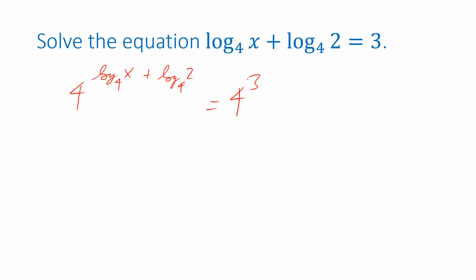Well, now we can use a property of exponential functions. Here's the one I have in mind. Let's write it with the base 4. So if I have 4 to the a plus b, another way to write that is 4 to the a times 4 to the b.